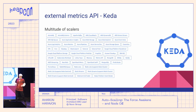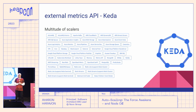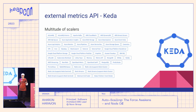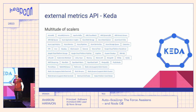It's just a kind of violation of the separation of concerns principle to have observability stack components performing some critical function. KEDA does its magic with out-of-the-box integrations with a multitude of middleware systems — message brokers, databases, and so on. The function of these integrations is to bring metrics from the external system into the Kubernetes external metrics API that Kubernetes can use to scale your application. These integrations are called KEDA scalers.